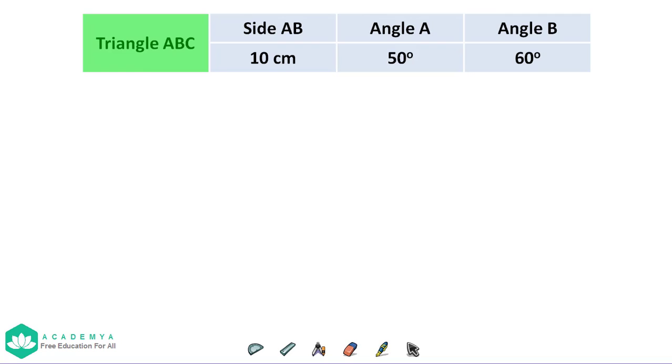We have to draw the triangle ABC with side AB 10 cm, angle A 50 degrees, and angle B 60 degrees.